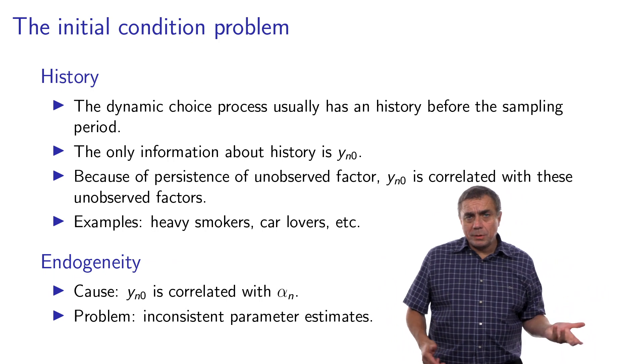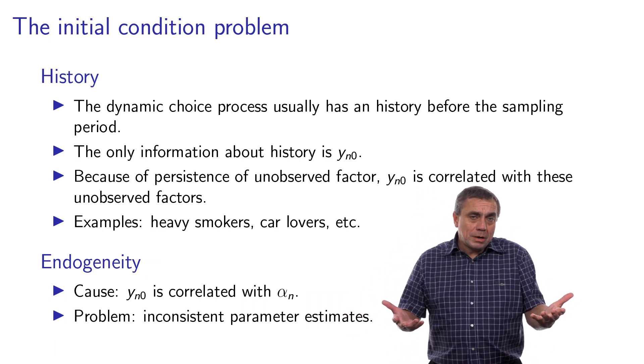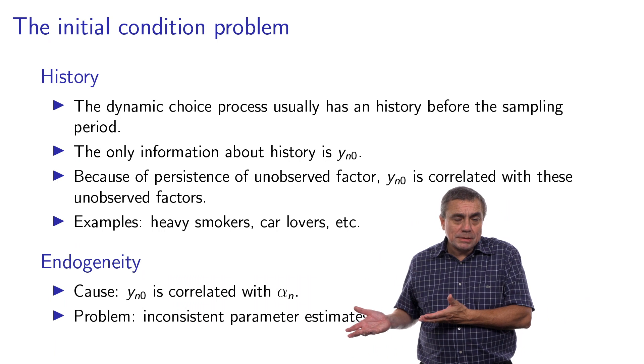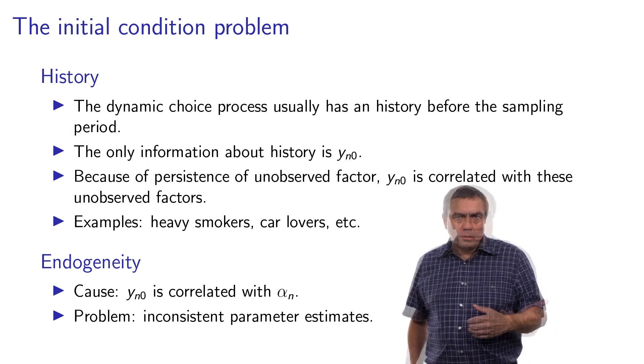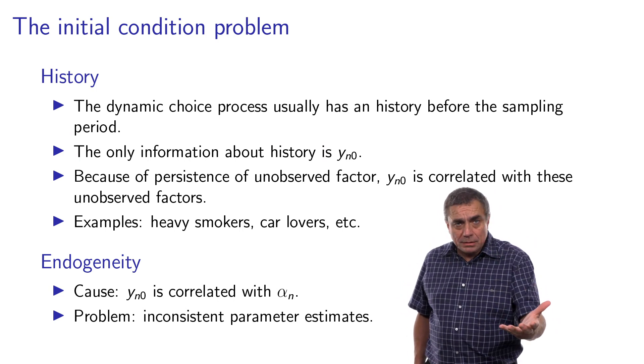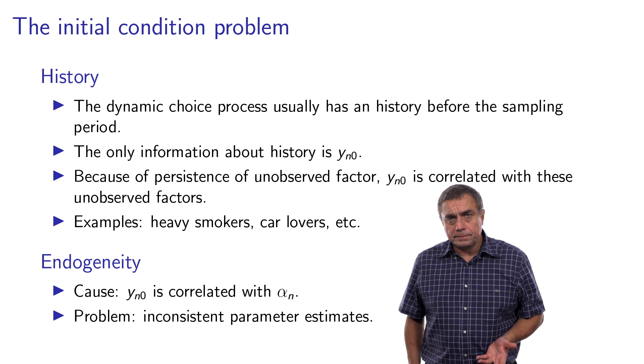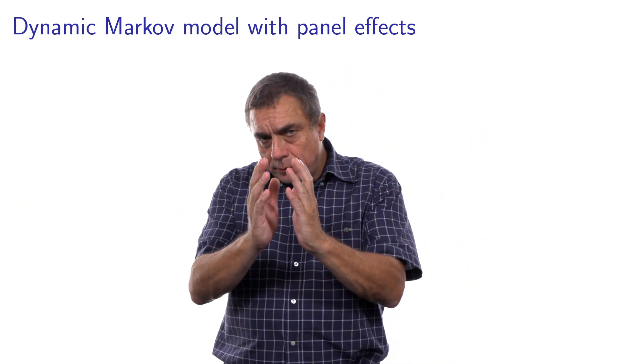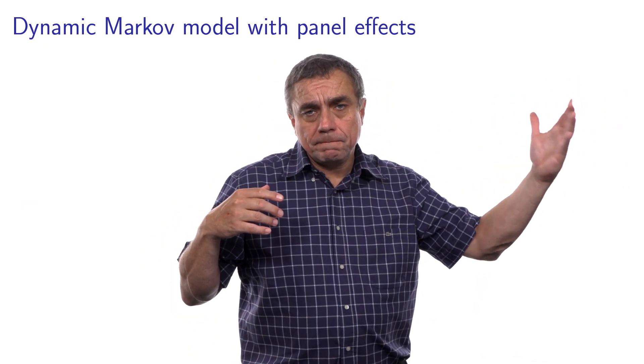So endogeneity is a big topic in econometrics. I like to call it a disease of a model. And the problem is that if you have an endogeneity issue, the parameter estimates that you obtain are inconsistent. And I gave you the intuition, right? Because for heavy smokers, you will realize that people like things which are expensive and bad for their health. So the sign of the parameters will go into the wrong direction. So this is the initial condition problem. The first choice and the panel effect are correlated because we have not observed the dynamic process from the beginning. This creates endogeneity, and if we ignore it, we will have the wrong values for the estimates.